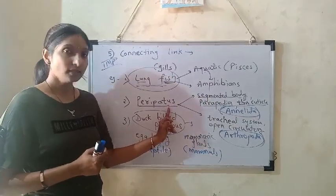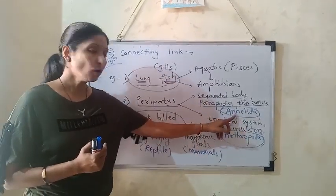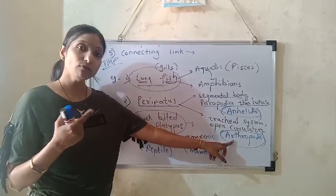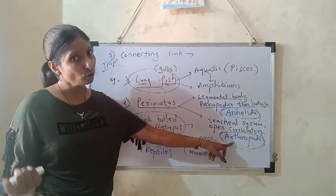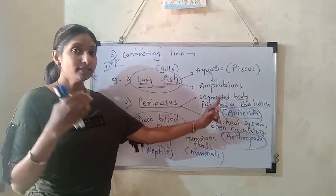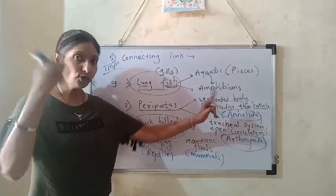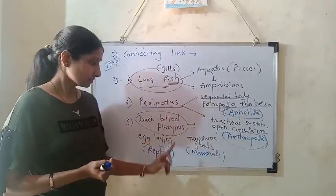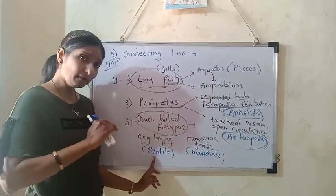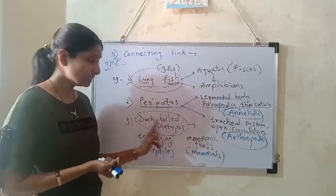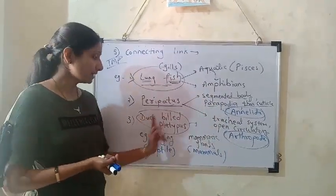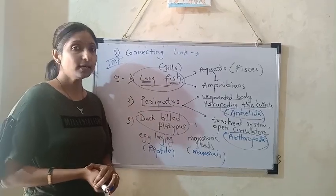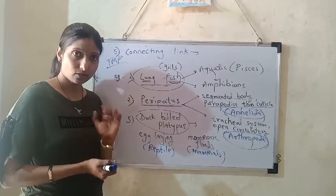Peripatus looks like a worm, like an earthworm, but shows characters of arthropods like cockroach. This means annelids evolved into arthropods. And reptiles evolved into mammals, as shown by the connecting link duckbill platypus.